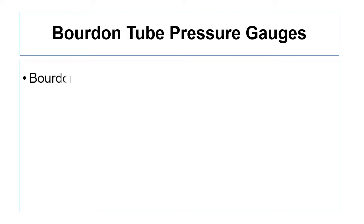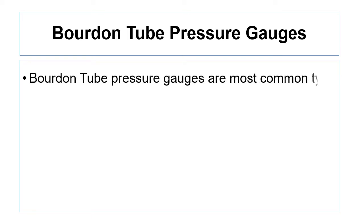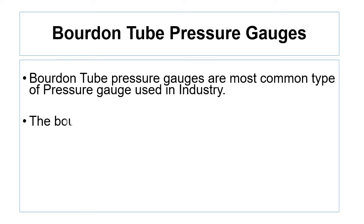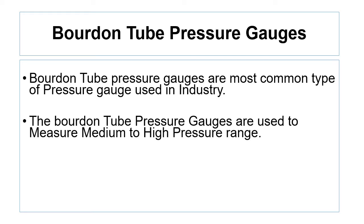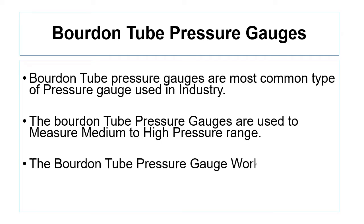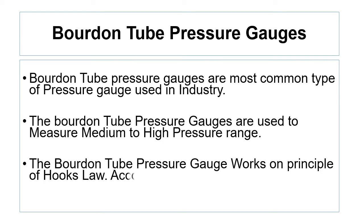Let's discuss the first pressure gauge — the Bourdon tube pressure gauge. Bourdon tube pressure gauges are the most common type of pressure gauges used in industry. They are used to measure medium to high range pressure. The Bourdon tube pressure gauge works on the principle of Hooke's Law: within the elastic limits, stress is proportional to strain.